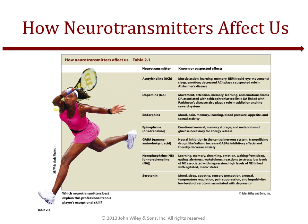Neurotransmitters are chemicals released by neurons that affect other neurons. Research has discovered that hundreds of substances function as neurotransmitters, and these substances help regulate a huge amount of our physiological processes. Studying neurotransmitters helps us understand medical issues — for example, low levels of dopamine are associated with Parkinson's disease, whereas high levels of dopamine contribute to some forms of schizophrenia.